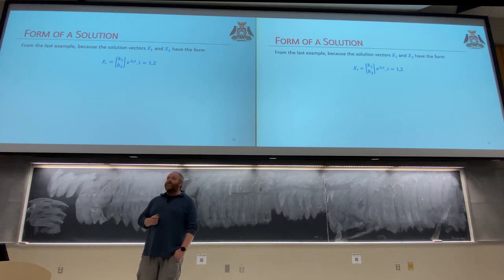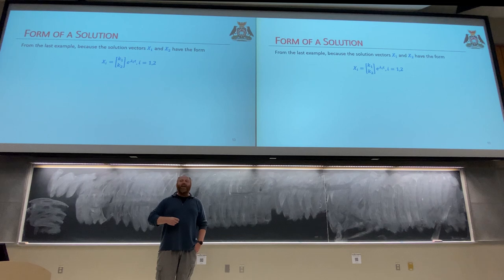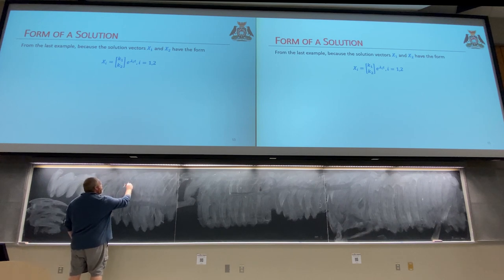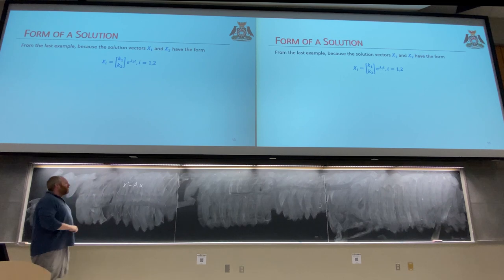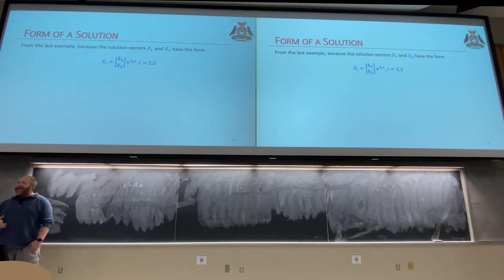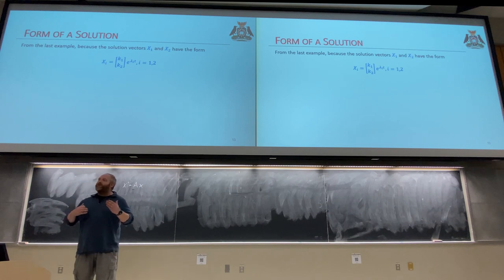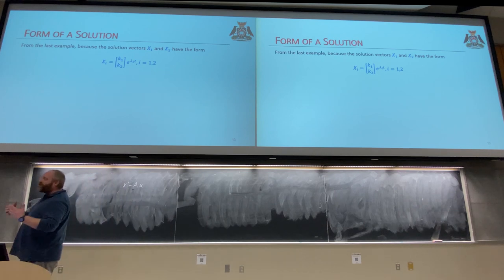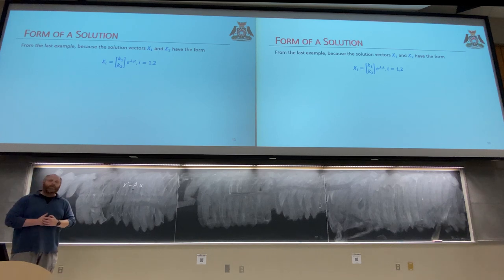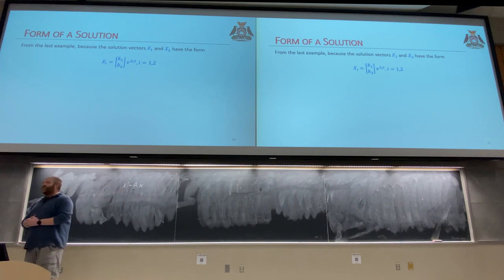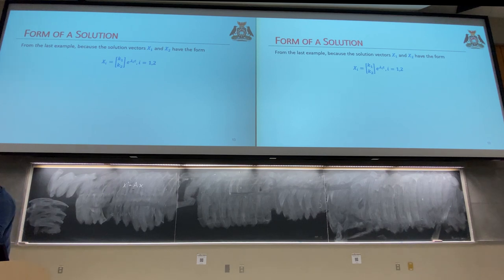Last class we introduced the problem — we took systems of differential equations and put them into matrix form. Specifically we're dealing with a homogeneous system. In matrix form it looks like x′ = Ax. Our goal is to find a solution vector x such that when we plug it in and transform it by A, the output is just the original vector with each entry differentiated with respect to t. To test whether a solution is valid, we plug it in, transform it, and check whether the output equals the derivative of the original.